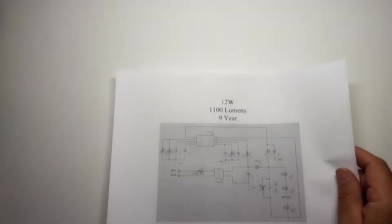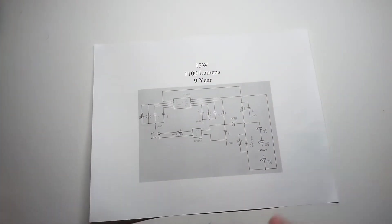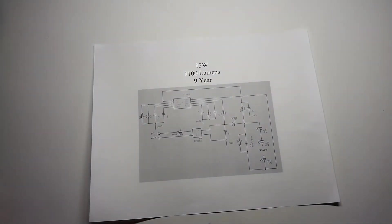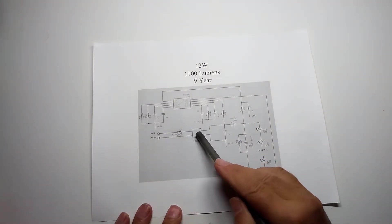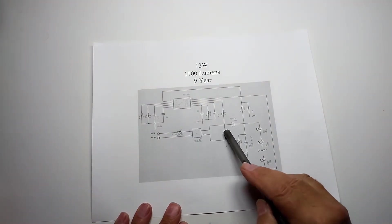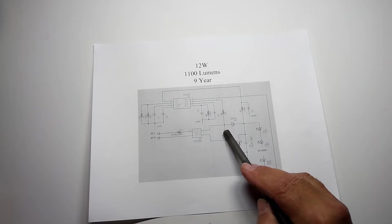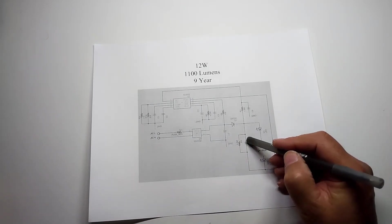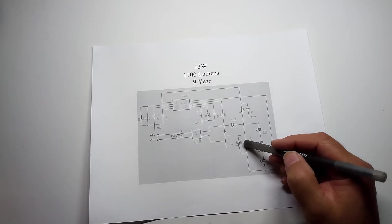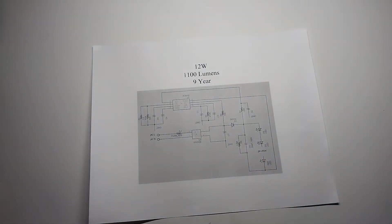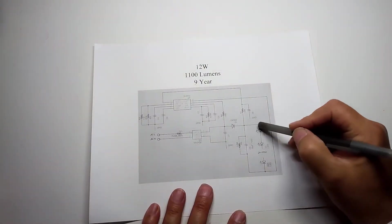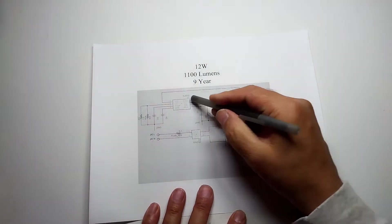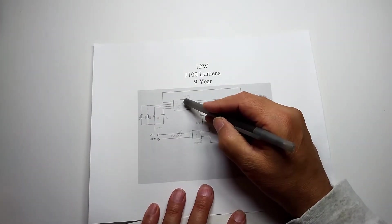I was able to derive the schematics for both of these and they're very similar. There's the inrush resistor, a bridge, a cap for ripple reduction, goes through a diode, another cap for more ripple reduction with a resistor to slowly bleed down the voltage on it, and then the LEDs and a constant current source chip.